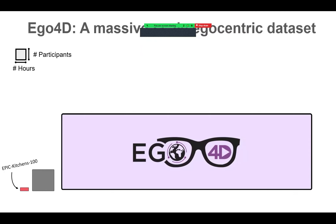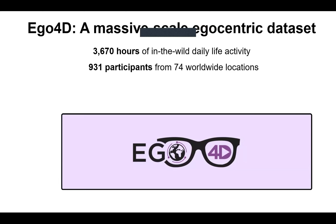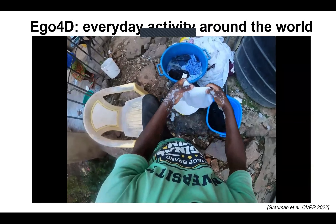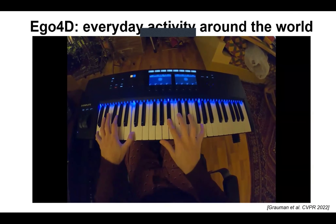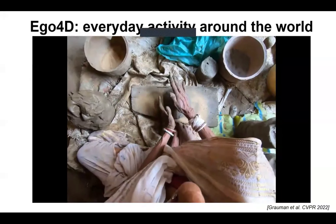When we announced Ego4D just two years ago at CVPR, we were talking about an order-of-magnitude leap on both dimensions. In this public open-source dataset, there are more than 3,000 hours of content in the wild — unscripted — captured by over 900 people wearing cameras in 74 different worldwide locations. The data is multimodal and comes with benchmark tasks to drive research in first-person perception.